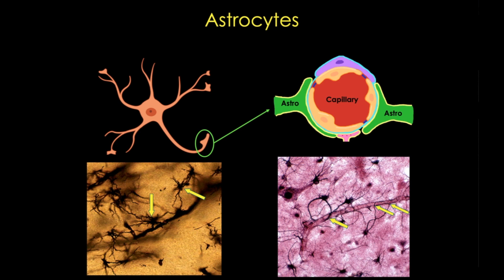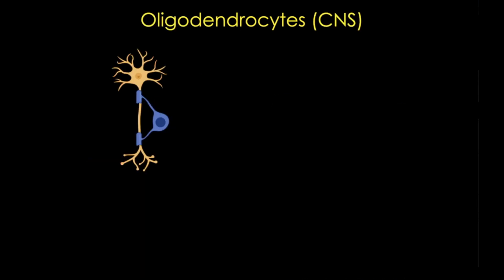Next up is the oligodendrocyte. These are small, round cells, and they maintain CNS neurons, promote their survival, and they also myelinate CNS axons. Each oligodendrocyte can form and maintain the myelin sheath that wraps like a helix around axons. And in the CNS, one oligodendrocyte can myelinate many axons.